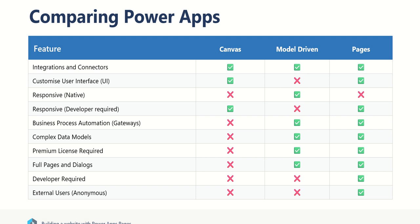Responsive design: Canvas apps are not responsive natively — they are talking about releasing responsive templates, but you do have to build responsiveness in yourself, and from experience it is quite painful. Model-driven apps are natively responsive, so they scale depending on which device you're using. PowerApps Pages are not really natively responsive — there are some elements, but it's not properly responsive. You do need a developer to make it fully responsive. So: Canvas apps need a developer for responsiveness, model-driven apps don't, and PowerApps Pages will need a developer to make them fully responsive.